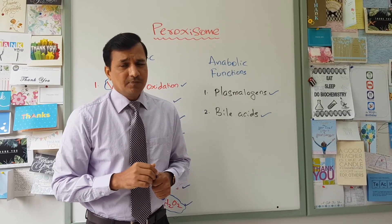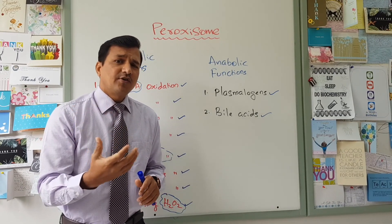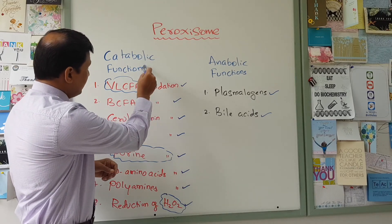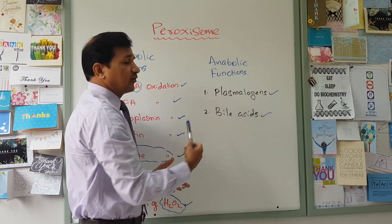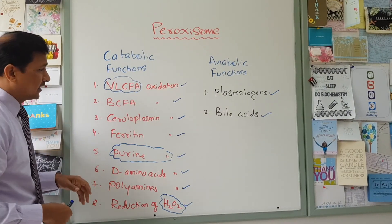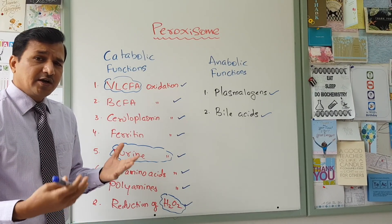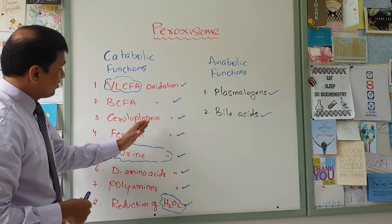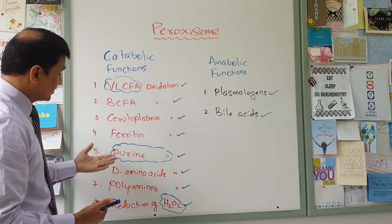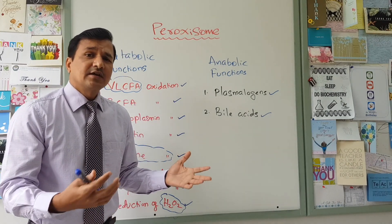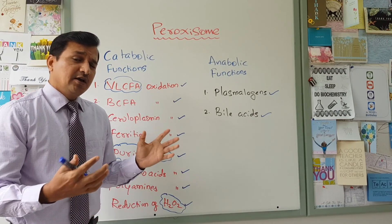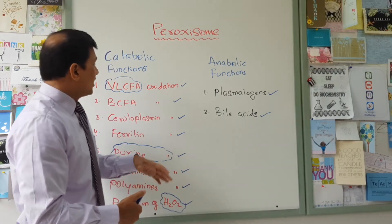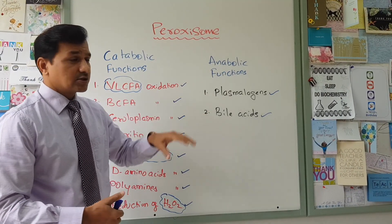Defects in PEX genes can give rise to Zellweger syndrome, X-linked adrenoleukodystrophy, and infantile Refsum disease. In all three conditions, both catabolic and anabolic peroxisomal functions are impaired, leading to accumulation of VLCFAs, phytanic acid (BCFA), ceruloplasmin, and ferritin in the blood — meaning increases in copper and iron. There is also a buildup of hydrogen peroxide, increasing reactive oxygen species. In infantile Refsum disease specifically, there is a defect in alpha oxidation of phytanic acid, leading to its accumulation.